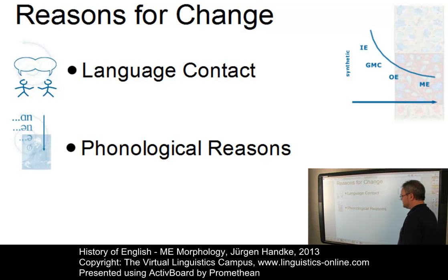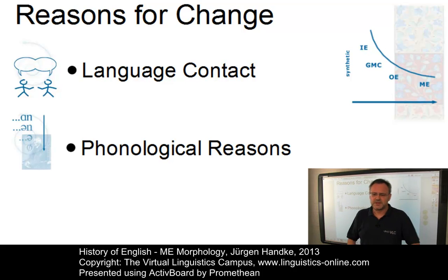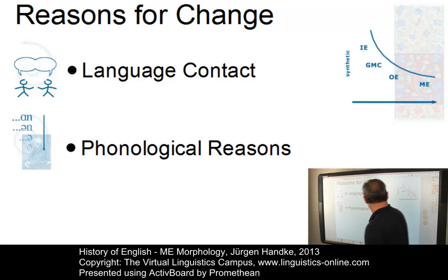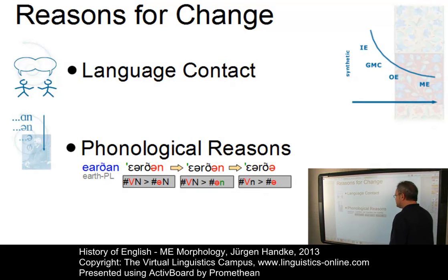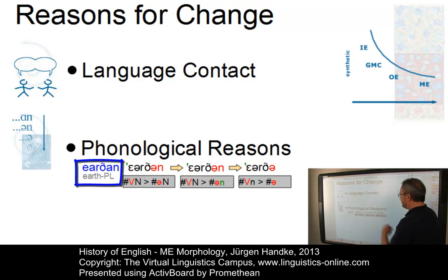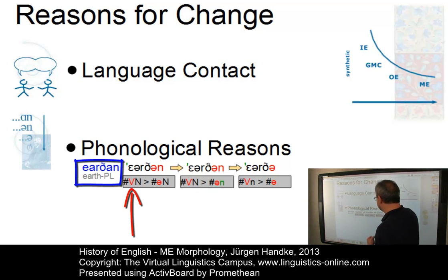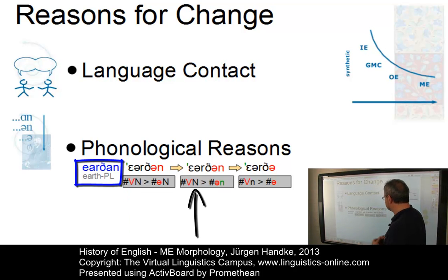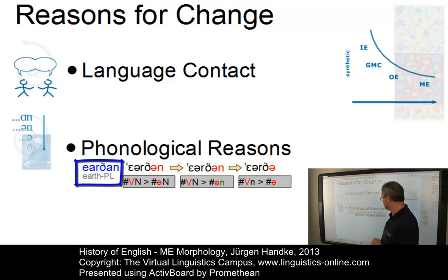And then there were phonological reasons. The weakening and eventual loss of unstressed syllables at the end of words weakened many of the Old English inflections. We already discussed this example in the e-lecture on Old English morphology. In words such as erdan, first of all the final vowel was reduced. Then a typical tendency was that nasals — final nasals — merged to alveolar nasals, and eventually these nasals were dropped.